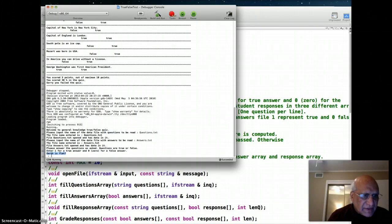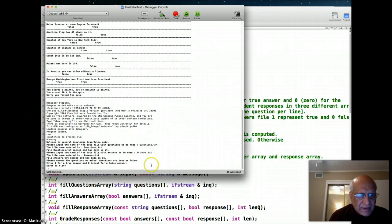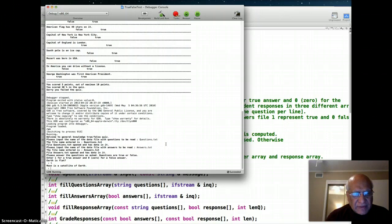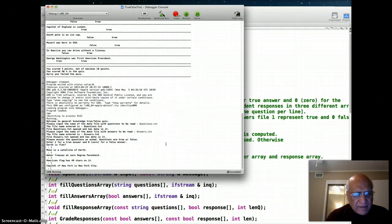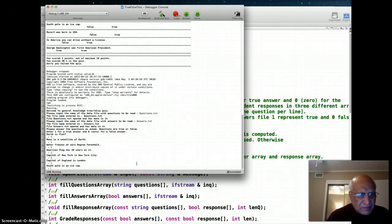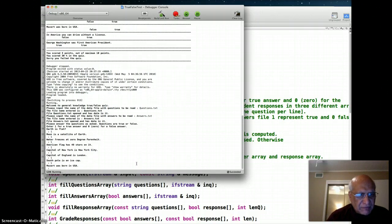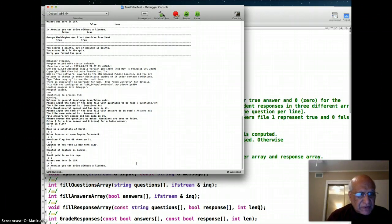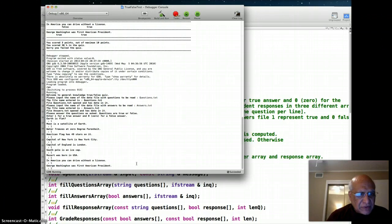Now the questions are being asked. The first question is Earth is flat. I can answer 1 for true or 0 for false. Knowingly, I'm just going to answer 1 for each - I'm going to assume that each answer is true. Capital of England is London, true. South Pole is an ice cap, true. Mozart was born in USA, true.